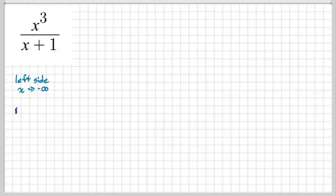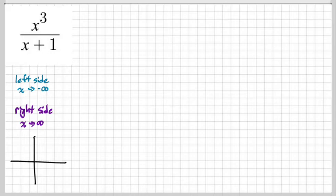When I'm talking about the right side of the graph, you want to take a guess? What is x approaching? x is going to positive infinity. And if you guys were to look at a graph — positive infinity is this way and negative infinity is this way, if you're counting on the x-axis. So that's left side versus right side.